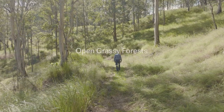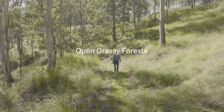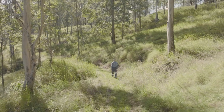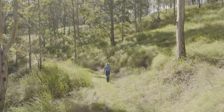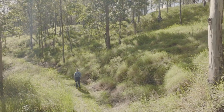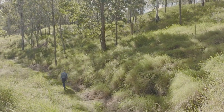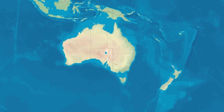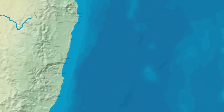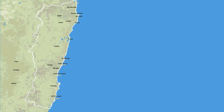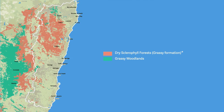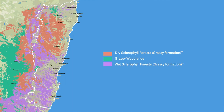Open grassy forests are a vegetation type with moderately tall trees and a reasonably open canopy that lets in some light, and the ground layer tends to be grassy. Open grassy forests have adapted with the traditional burning practices of Australia's First Nations people. In Australia, on the north coast of New South Wales, there are three types of open grassy forest, including dry sclerophyll forests, grassy woodlands and wet sclerophyll forests.